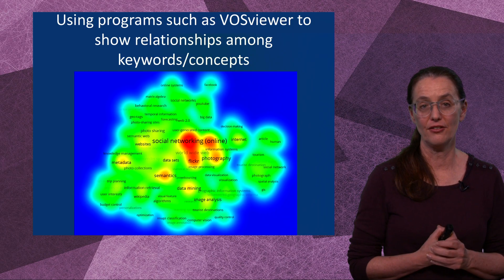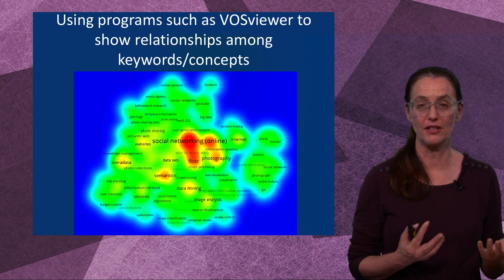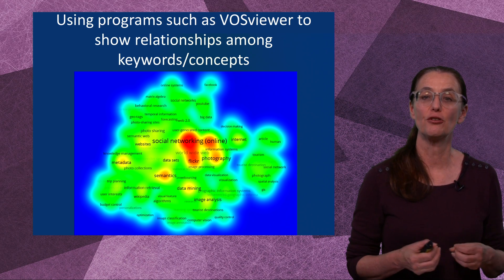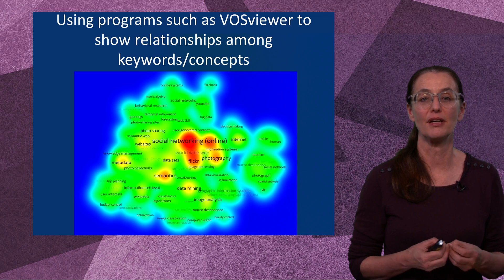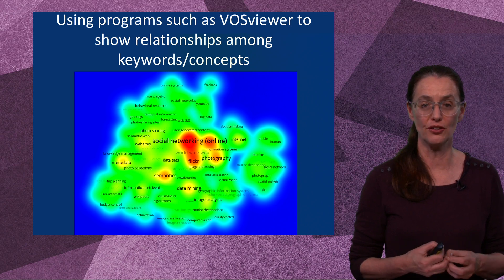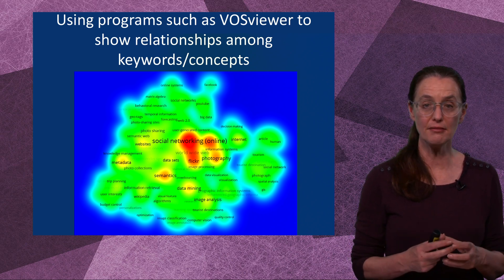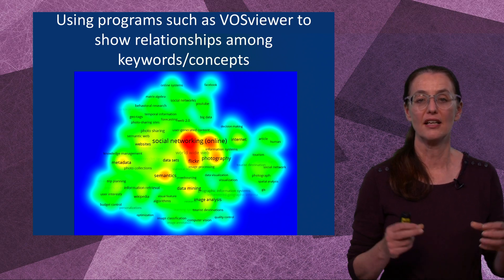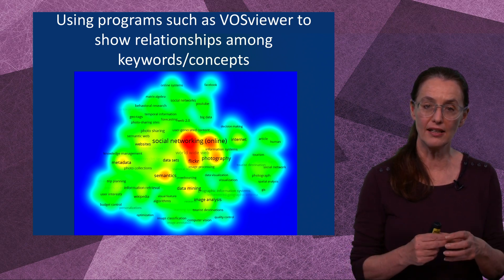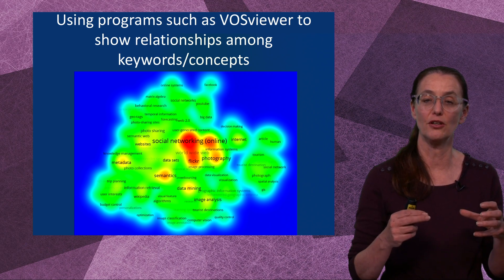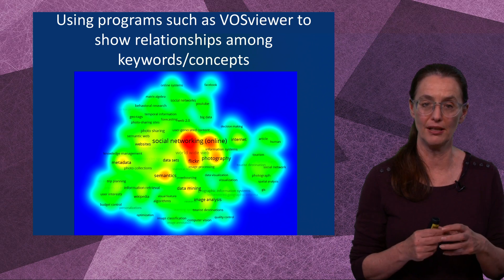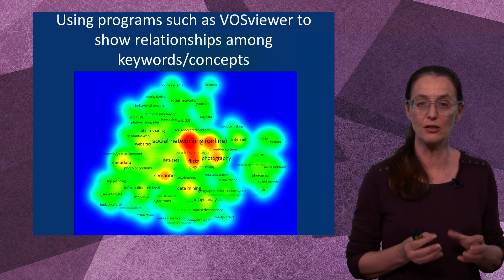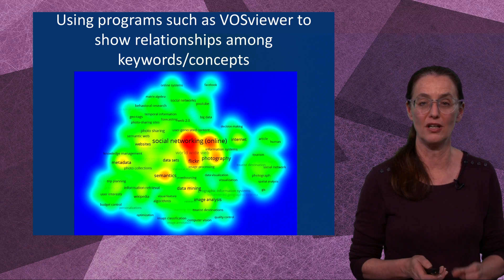Another example is using free online programs such as VossViewer, which again shows the relationship amongst keywords and concepts. It's a heat map where the redness of the points indicates how likely those concepts or keywords were to be occurring in the same paper — showing the diversity of topics and which are the concentrated ones.